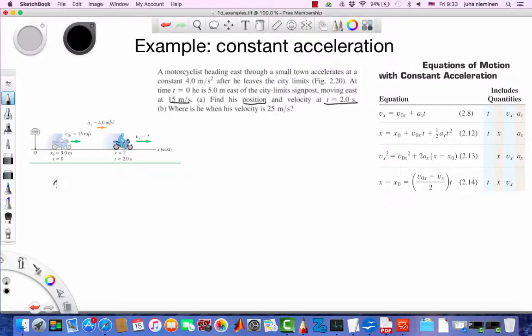We can evaluate x at 2 seconds: x = x₀ + v₀t + ½at². I'll drop the x subscript since it's evident we're on the x-axis. Initial position x₀ is 5 meters. Initial velocity moving east is 15 meters per second. The important thing to realize is our x-axis is positive to the right, so heading east gives positive velocity.